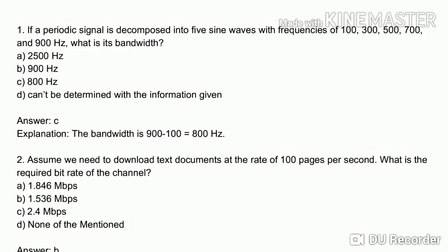Hi, this is JK Academy. Today we cover communication and network concepts: bandwidth and data rate multiple choice questions. First question: if a periodic signal is decomposed into five sine waves with frequencies of 100, 300, 500, 700, and 900 Hz, what is the bandwidth? The bandwidth is found by taking the highest frequency (900) minus the lowest (100), which equals 800 Hz.